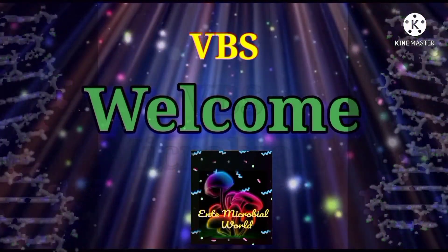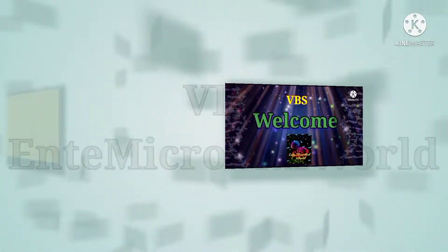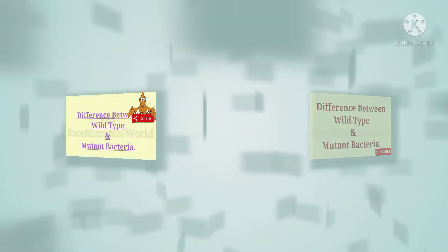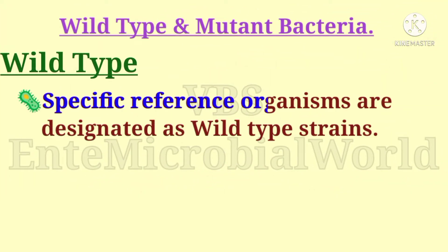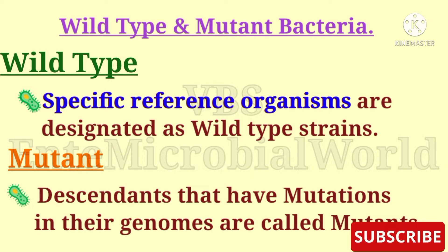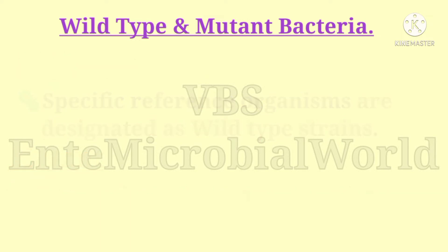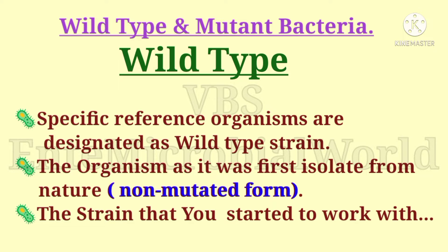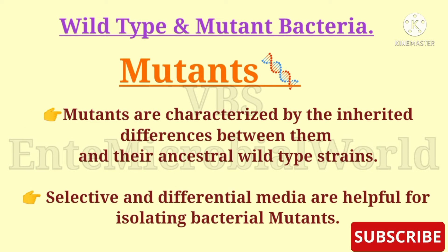Hello friends, welcome to my video. In this video we are going to see the difference between wild type and mutant bacteria. In microbial genetics, specific reference organisms are designated as wild type strains, and descendants that have mutations in their genomes are called mutants. We can also say the wild type is the organism as it was first isolated from nature — the non-mutated form, or the strain that you started to work with.